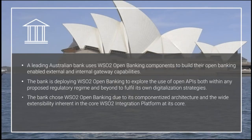I'd like to walk through a detailed example — an implementation we were involved in with a leading bank in Australia. The reasons they chose WSO2 were: the componentized modular architecture, the ability to select capabilities, and the ability to have multiple deployment options. Those were the key capabilities recognized when choosing WSO2 as their open banking platform.